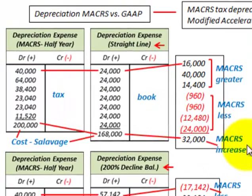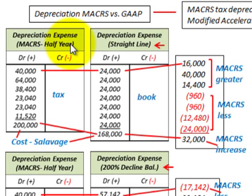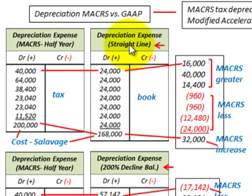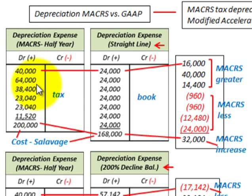Let's look at our example. We're comparing depreciation expense for MACRS using the half-year convention versus various GAAP methods. Starting with GAAP straight-line depreciation expense shown here — this is for our book purposes — and then MACRS is for our tax purposes.